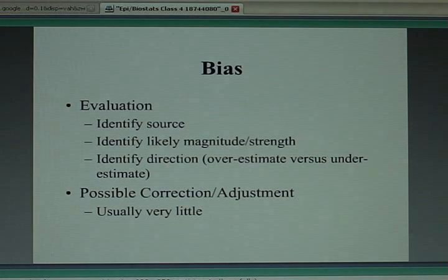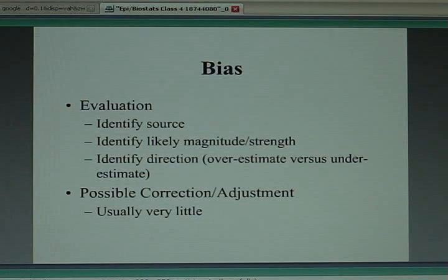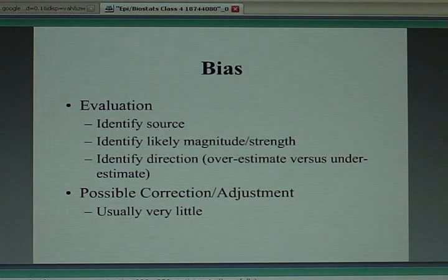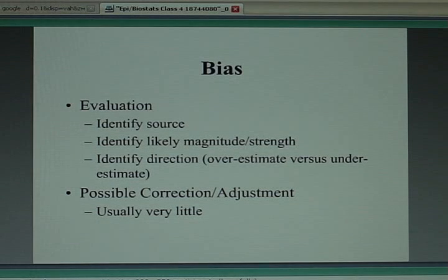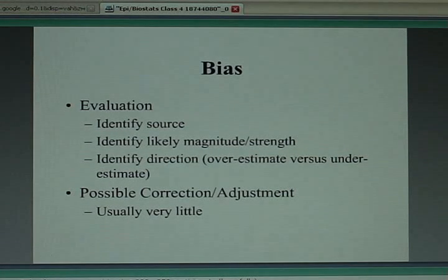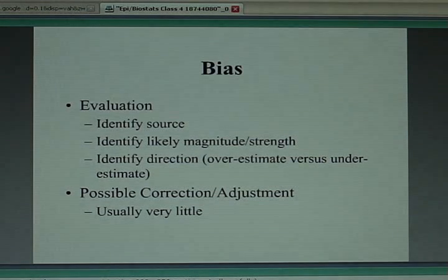If you have a bias in a study — which you probably will, since there's no perfectly clean study — the first challenge is to evaluate whether a bias exists by identifying its source: is it a selection problem or a measurement problem? Next, assess whether it's a serious problem. Is the association you're observing way off, or only slightly off center? In other words, is the answer close to reflecting the true effect of the exposure, say telemedicine, on some outcome? Or are you getting a totally wrong answer? That involves identifying whether it's a strong or weak bias and understanding which direction it's pushing your result.